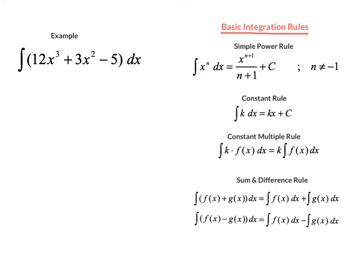The most basic rule is called the simple power rule, and it states that if we take the integral — there's an integration symbol here, this large S symbol — the integral of x to the nth power dx. In order to run an antiderivative, what we have to do is add 1 to the exponent, giving x to the n plus 1, since the derivative subtracts 1, and the antiderivative adds 1 to the exponent. Then to balance the coefficient, we divide by that new exponent, n plus 1.